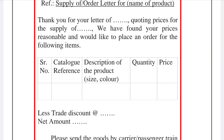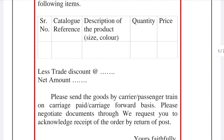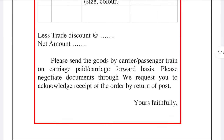You can change the product details as needed. The list may include a discounted net amount. You write the amount and price from the quotation letter. For the last paragraph: 'Please send the goods by carrier or passenger train on carriage paid or carriage forward basis.'